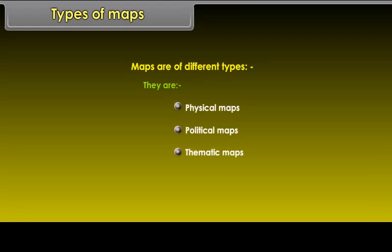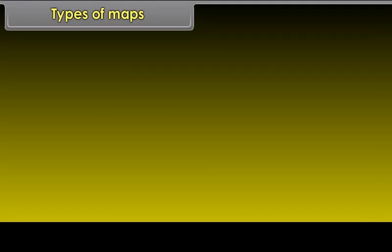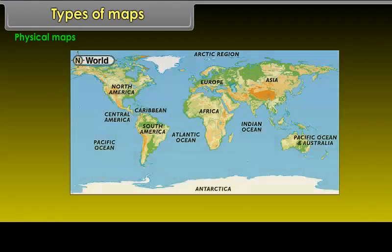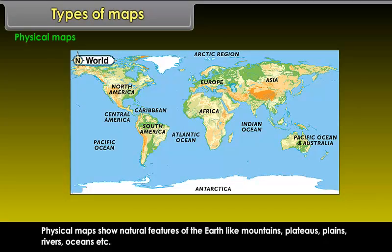Types of Maps. Maps are of different types. They are Physical Maps, Political Maps, and Thematic Maps. Physical Maps show natural features of the earth like mountains, plateau, plains, rivers, oceans, etc.